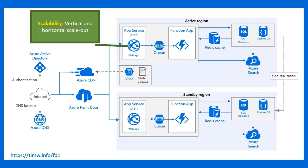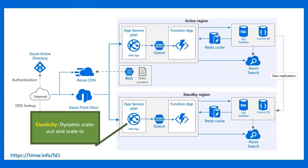Horizontal scale-out is where you either manually or automatically clone an Azure resource. A web app, for instance, can be configured for automatic scale-out such that as web traffic spikes, Azure clones the application to multiple instances and automatically spreads the load across those cloned instances.